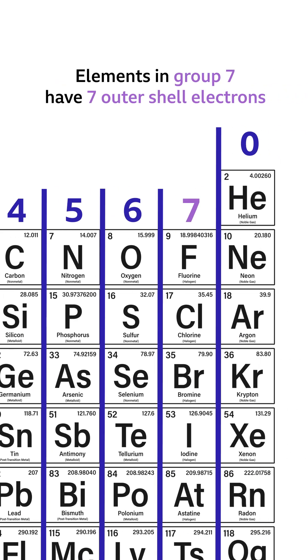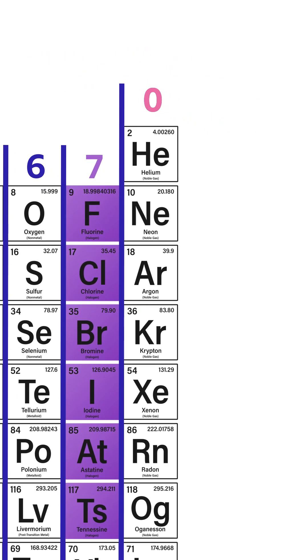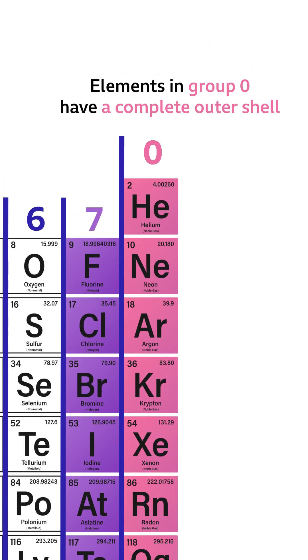Whereas group seven, fluorine, chlorine, bromine, iodine, all have seven. In group zero, the far right column with helium, neon, argon, and krypton have a complete outer shell.